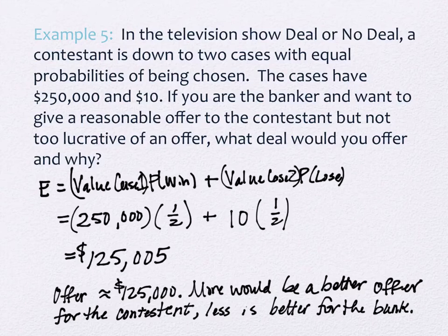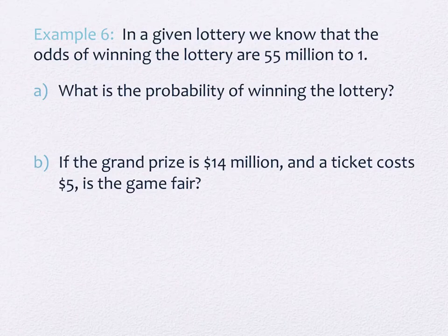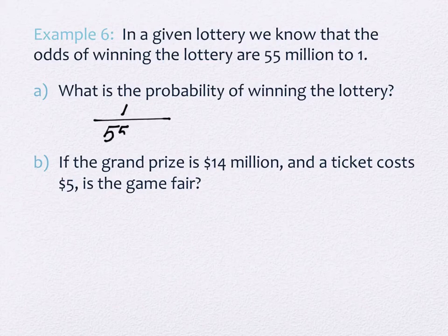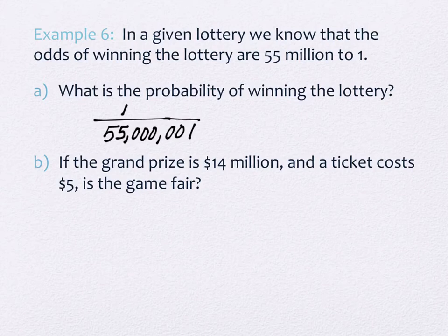I have one more example for you. It's a lottery example. In a given lottery we know that the odds of winning the lottery are 55 million to one. What is the probability of winning the lottery? Okay, they gave me odds and I need probabilities. So if the odds are 55 million to one then the probability is one over 55 million one. The tendency is to say 55 million because it's pretty close but it's 55 million one because probability considers those who win and those who lose.